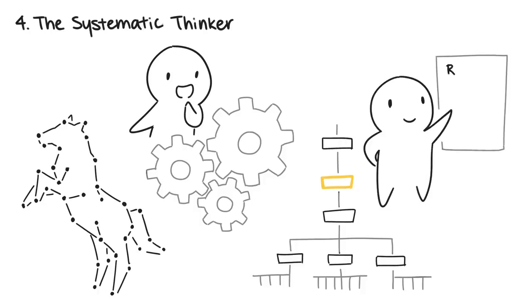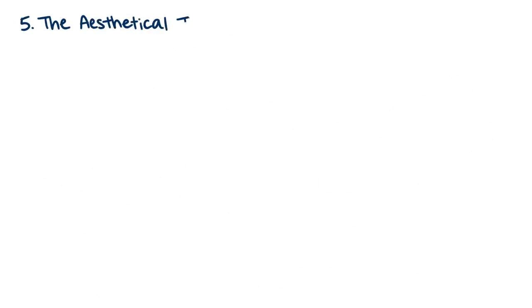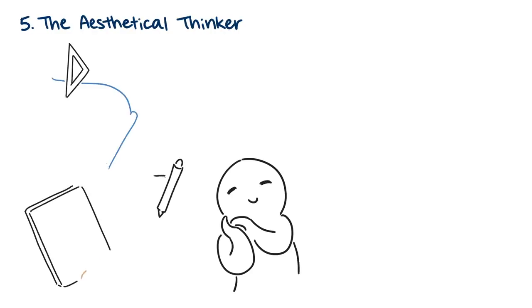Five: the aesthetical thinker. Aesthetical thinking involves producing or creating things that are pleasing to our senses. The individual may have strong visual and spatial skills, choosing to delve into careers such as architecture, painting, and drawing.